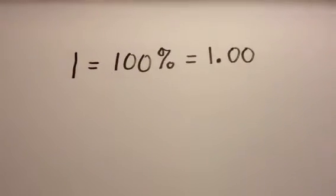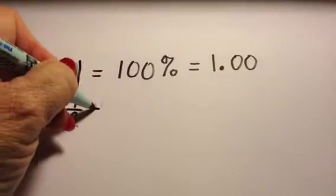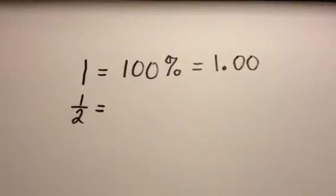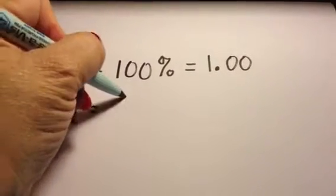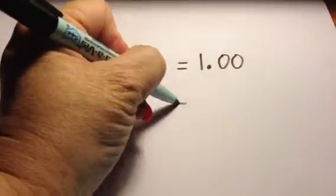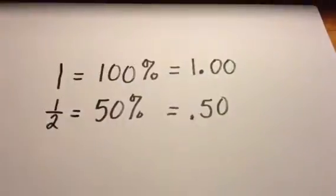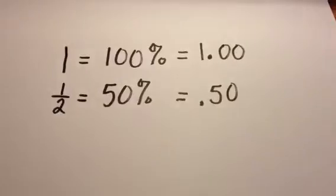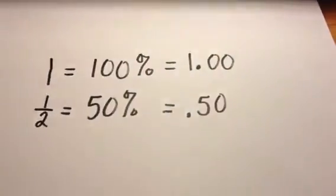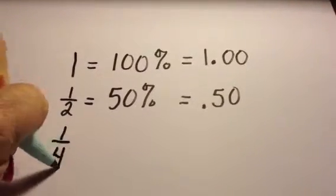Now let's think about the number one half. Half of anything would be like half a dollar, which would be 50%, and it would also be 50 cents or 0.5 or 0.50, because remember we can always eliminate those last zeros.